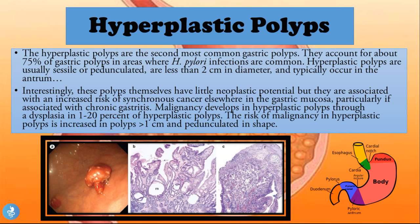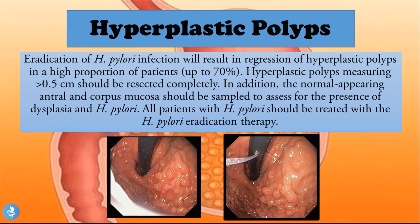Hyperplastic polyps are associated with an increased risk of synchronous cancer elsewhere in the gastric mucosa, particularly related to chronic gastritis. Because H. pylori causes chronic inflammation of the gastric mucosa, that inflammation carries malignant potential — though usually the hyperplastic polyps themselves are not the direct cause. Malignancy develops through dysplasia in 1 to 20 percent of hyperplastic polyps, with risk increased in polyps over one centimeter and pedunculated in shape. Eradication of H. pylori results in regression of hyperplastic polyps in about 70 percent of patients.